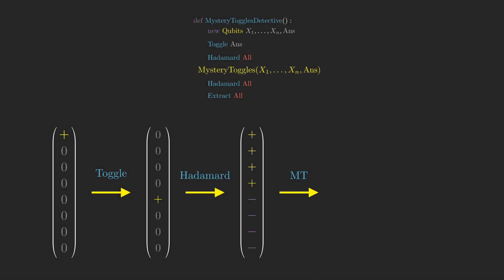A key feature of Mystery Toggles Detective is that after Mystery Toggles is called, the state vector of our qubits encodes a truth table for Mystery Toggles, which we can call tt, where positive amplitudes correspond to Mystery Toggles outputting answer equals 0, and negative amplitudes correspond to Mystery Toggles outputting answer equals 1.